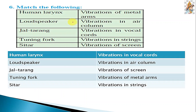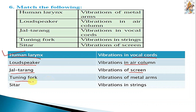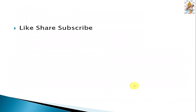Question number six: match the following. Human larynx — vibration of the vocal cords. Loudspeaker — vibration of screen. Jal Taran — vibration in air column. Tuning fork — vibrations of metal arms. Sitar — vibrations in strings.